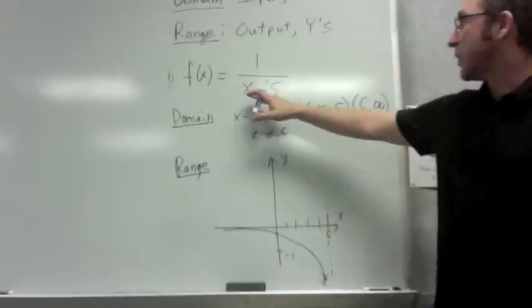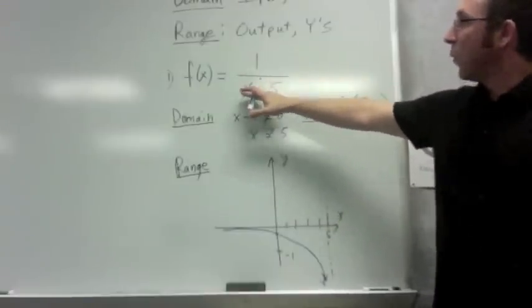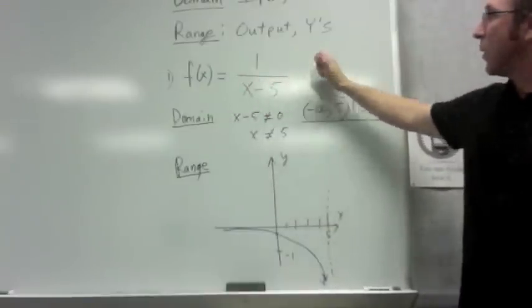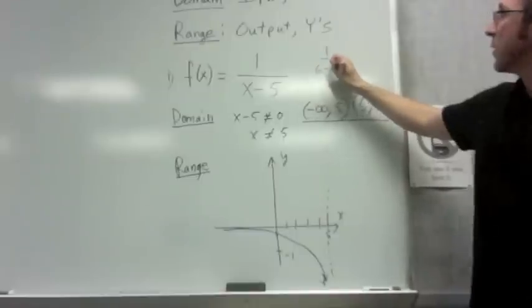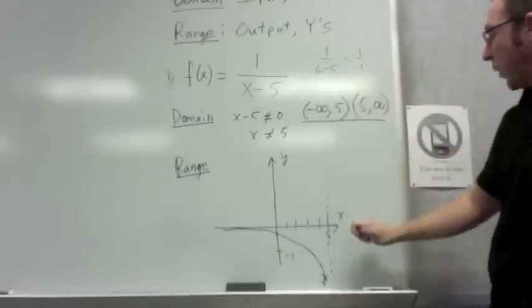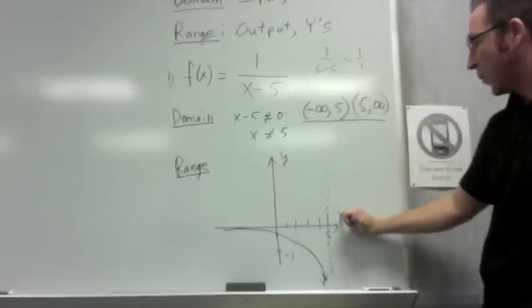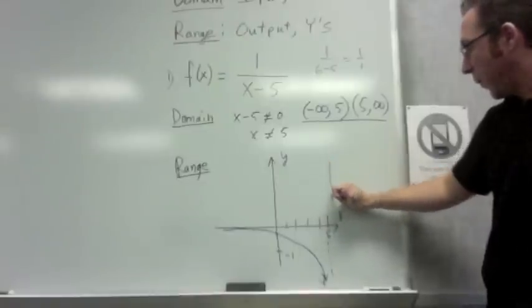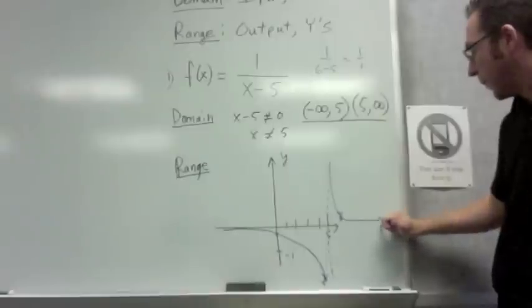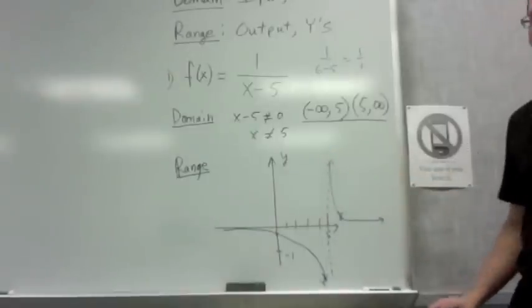If I plug in a number like 6, I get 1 over 6 minus 5. So if I plug in 6, I get 1 over 1. So I know that when x is 6, the y value is 1. And the graph will bend around this way. So with your graphing calculator, you could also get that.